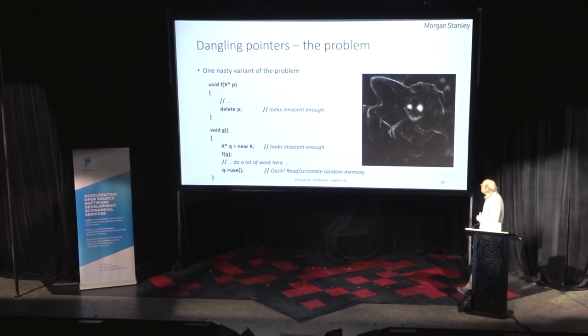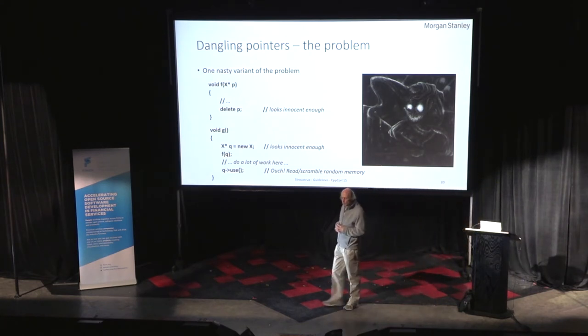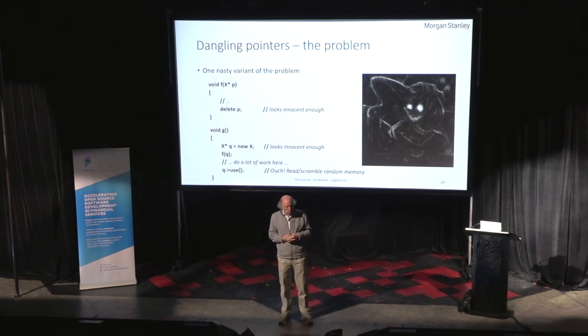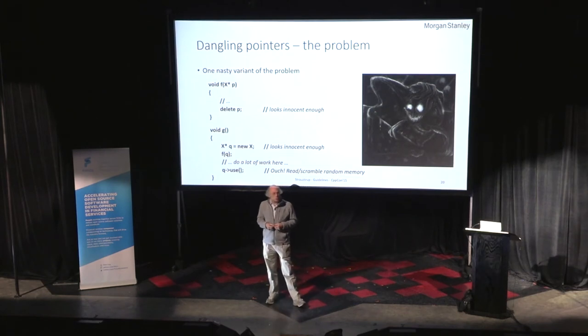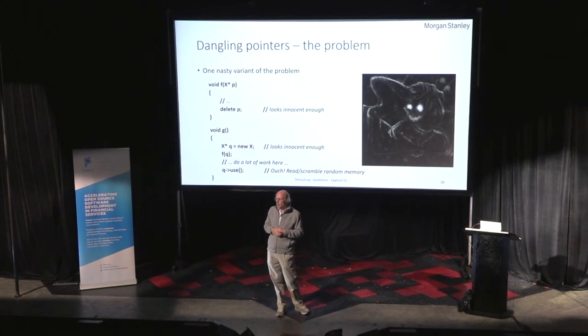Now I'm going into my least favorite problem here: dangling pointers. Here we see my illustration of a nightmare, because this is the worst nightmare. We have a piece of code where function f takes a pointer, looks innocent, and it deletes that. Then we go down and use it — we make a new object, call the function, and then use the pointer we got. This is disaster because we used the object after deletion. So instead of using my object, I may be scrambling yours.